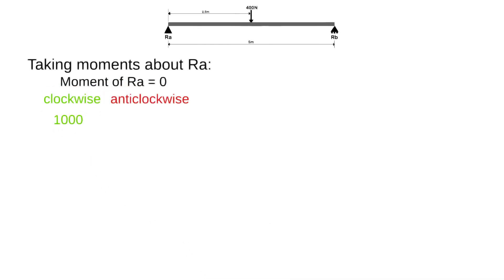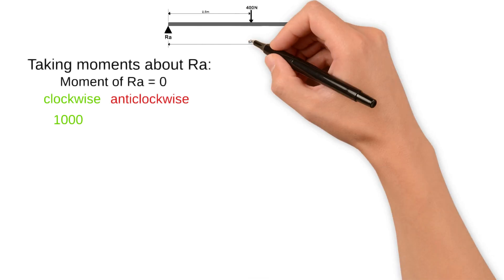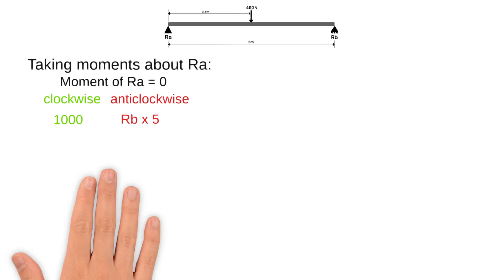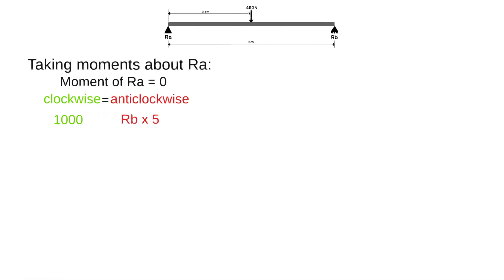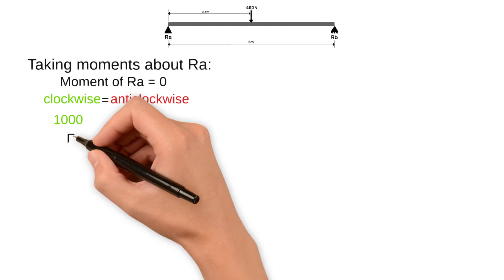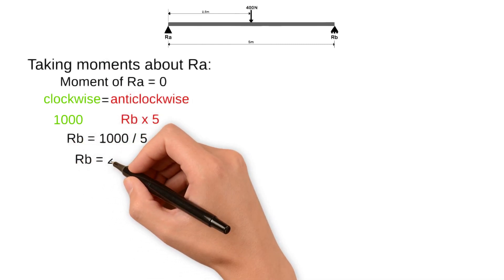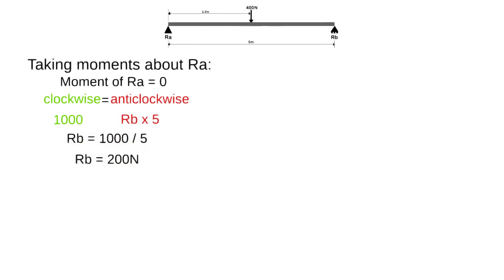So total clockwise moments equal 400 times 2.5 which equals 1000 newton metres. The only anti-clockwise moment we have is caused by the support reaction RB at a distance of 5 metres. Since the beam is in equilibrium the clockwise moments must equal the anti-clockwise moments, so we can transpose this equation to find RB by dividing 1000 by 5 which gives us 200 newtons.